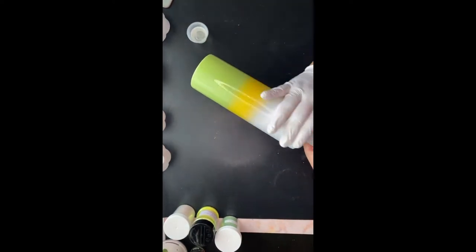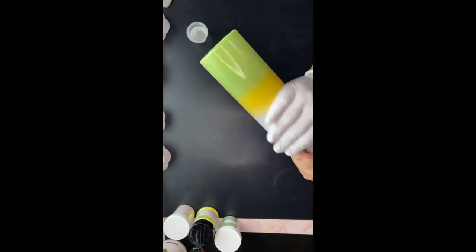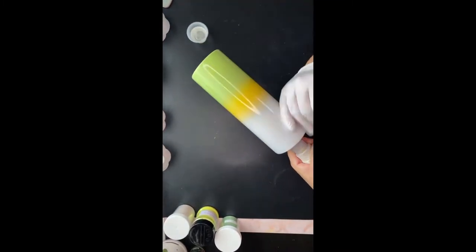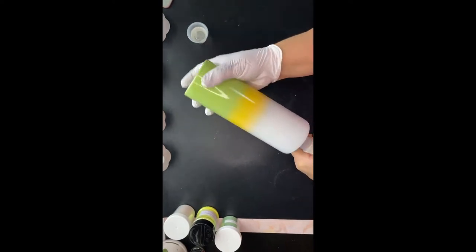It does help if your tumbler is a bit warm, so you can either hit it with your heat gun or do as I do and place it in front of a small space heater for a few minutes before you apply the resin to it.